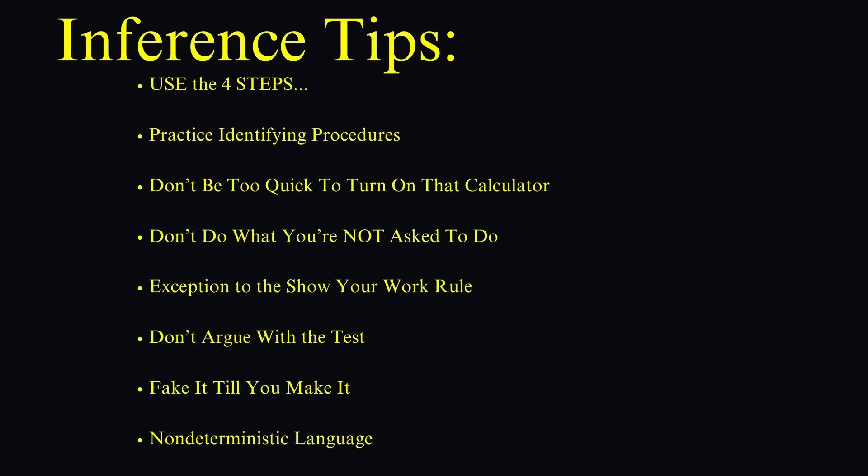Another thing you can do to save time is to use your calculator for the do step and just report the key results, such as the interval endpoints or test statistic, degrees of freedom, and p-value. As long as you name the procedure, you should be okay. But there is a risk involved because if you enter something incorrectly into your calculator and get the wrong numerical value, you can't get partial credit for the math that isn't there.